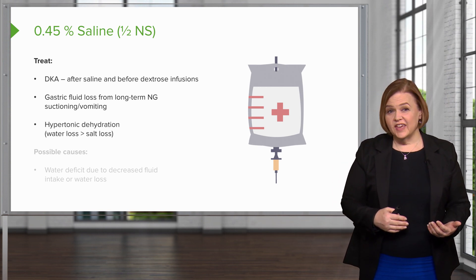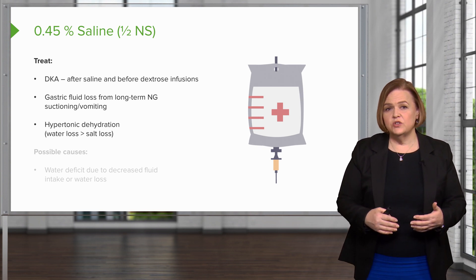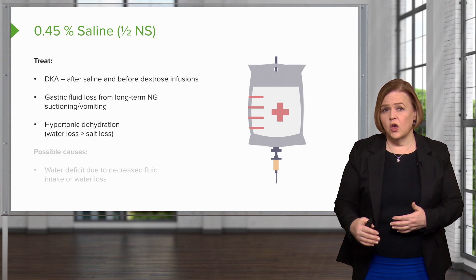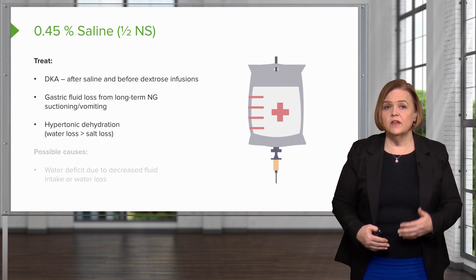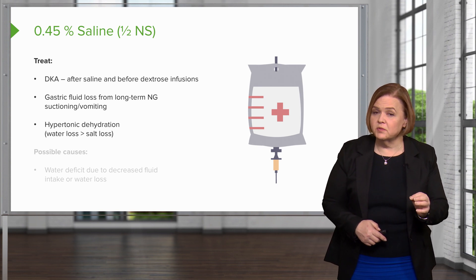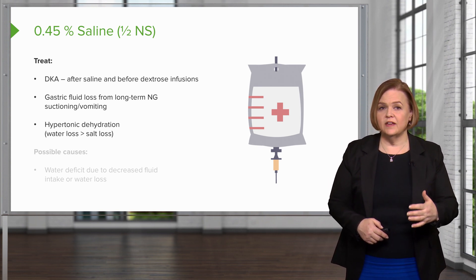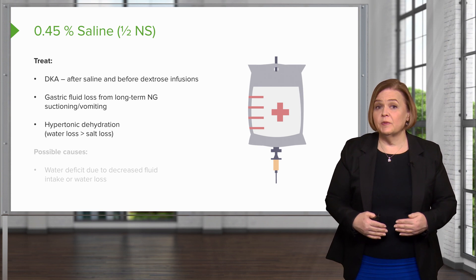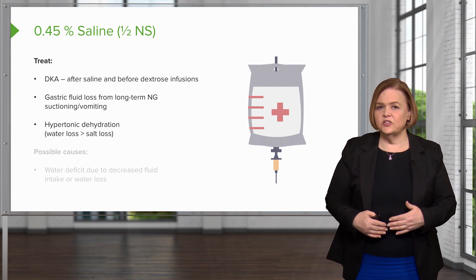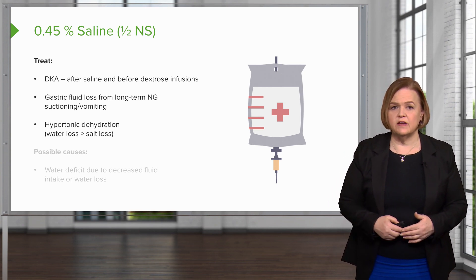If someone has hypertonic dehydration, that means their water loss is greater than their salt loss, so now they're pretty salty. We can hang a half normal saline — that's 0.45%, which we usually just call half normal saline. Because this patient has hypertonic dehydration and an elevated sodium level, hanging half normal saline would actually be of benefit.